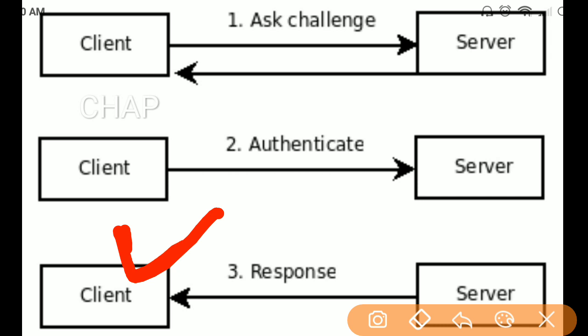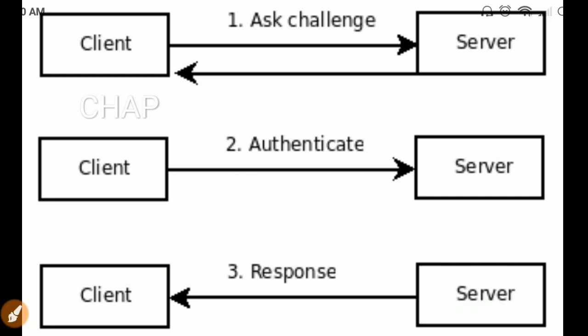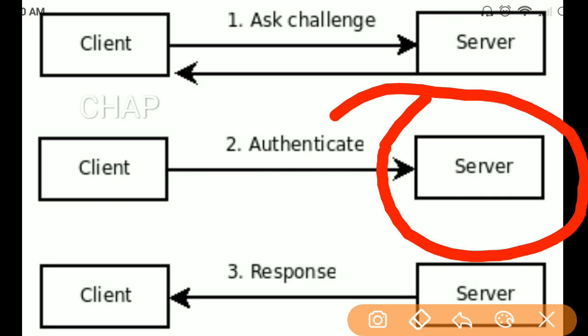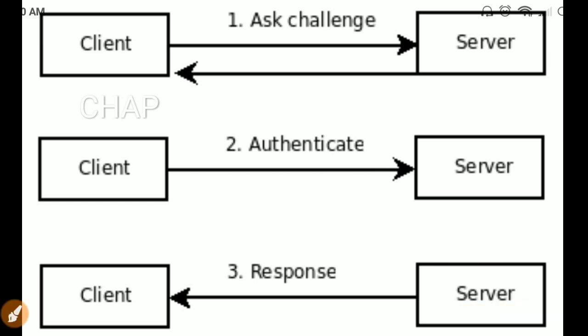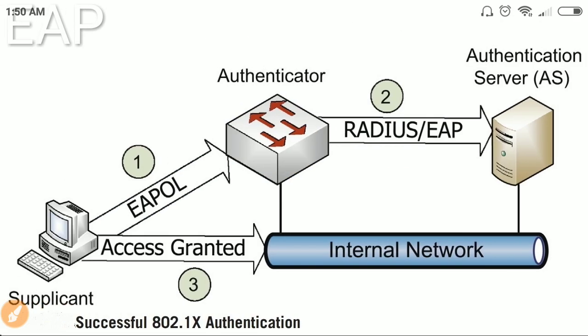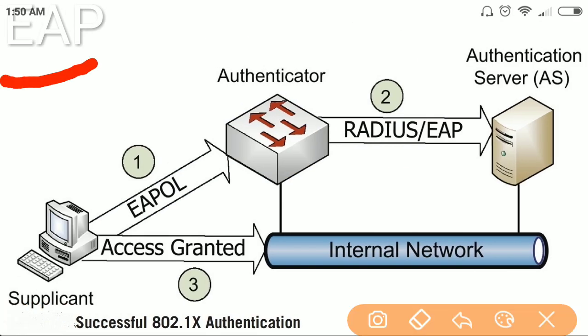The Challenge Handshake Authentication Protocol suffers from only one vulnerability, or single point of failure: the server. If an attacker can compromise the server, then they can access all the passwords which are stored in clear text on the server.